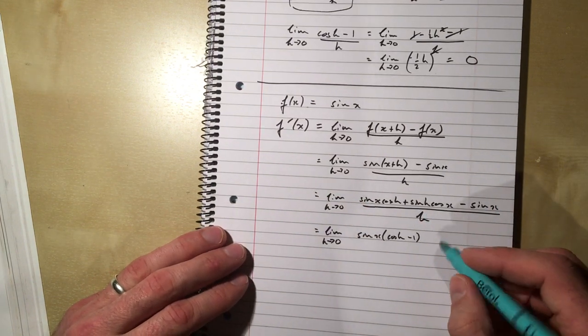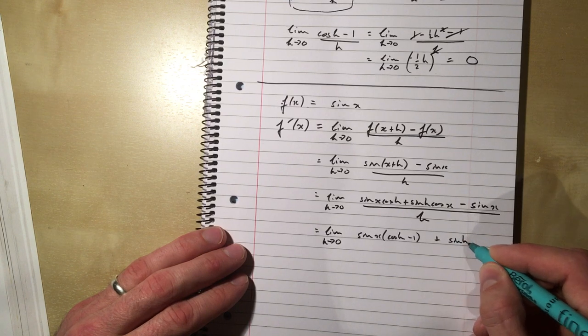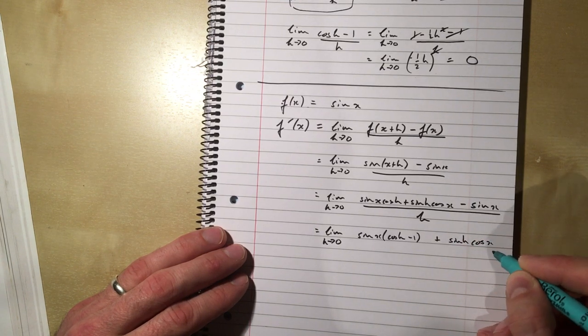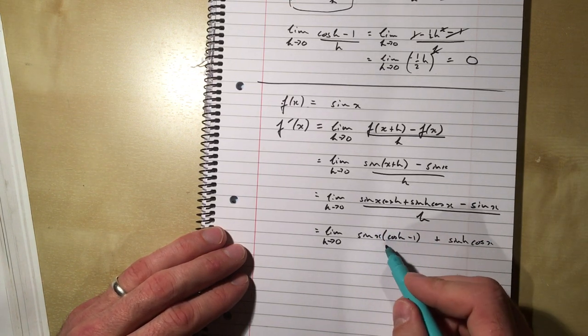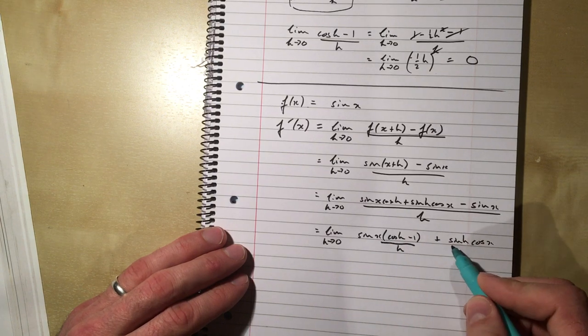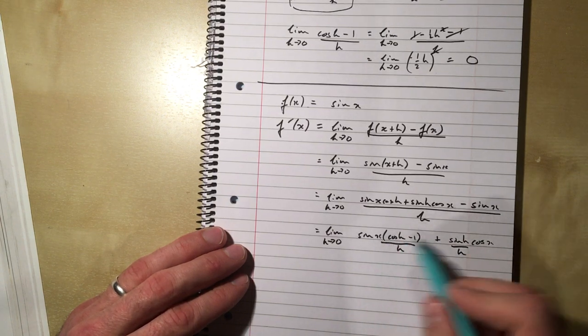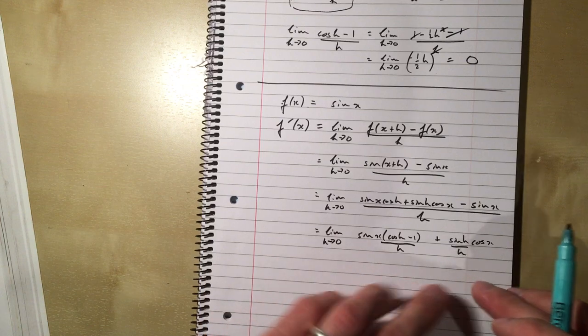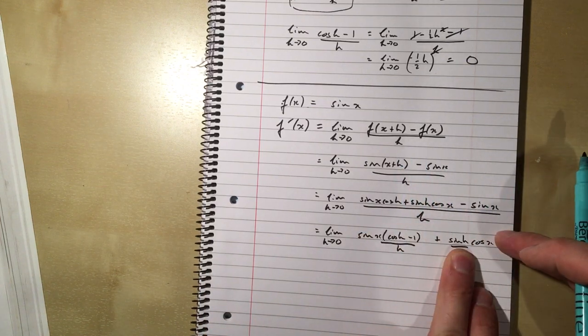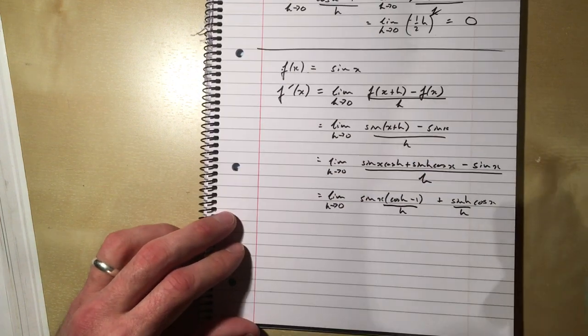And then we've got plus sine h cos x. And instead of writing it all over h, I'm going to put the denominator over here and over here. So these two fractions here, if I combine them, we'll have a common denominator of h, and we'll have all that on the top, but I'm just splitting it into two separate ones.